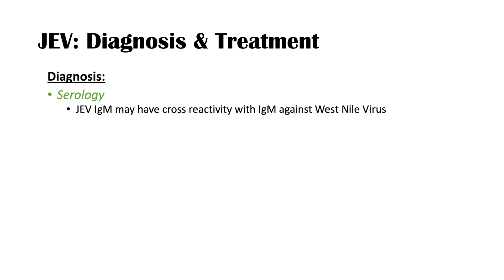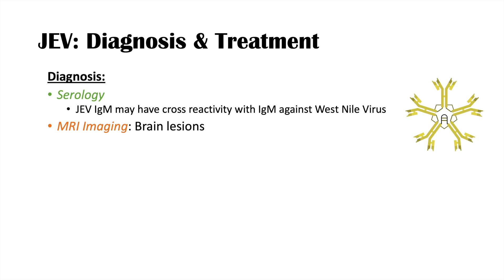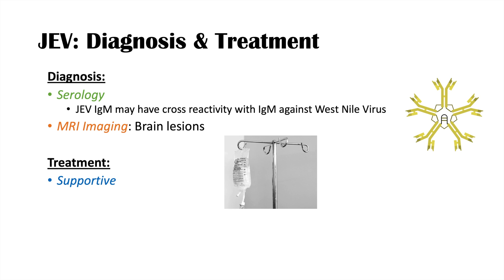Diagnosis of JEV is usually through serology, looking for JEV immunoglobulin M (IgM). There is cross-reactivity between JEV IgM and West Nile virus IgM, so the separation between these two is not perfect. MRI imaging can also be done to identify characteristic brain lesions in the basal ganglia, thalamus, midbrain, and pons. Treatment of JEV is supportive, as there is no official antiviral treatment — clinicians treat symptoms, maintain hydration, and help patients resolve the condition.